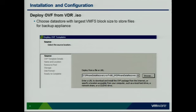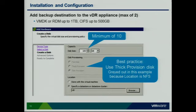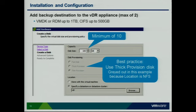When adding backup destinations, you can have one or two — a maximum of two. There are minimums and maximums to keep in mind: I recommend staying around one terabyte for stability, maybe around 500 GB on a CIFS share, though larger sizes are supported. The minimum size is 10 GB. Best practice is to use a thickly provisioned disk so you don't suffer performance hits if VDR needs to grow the VMDK file.